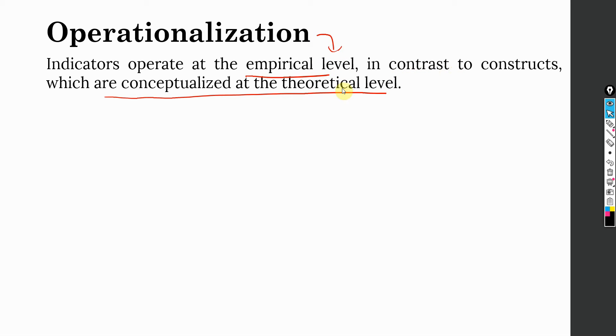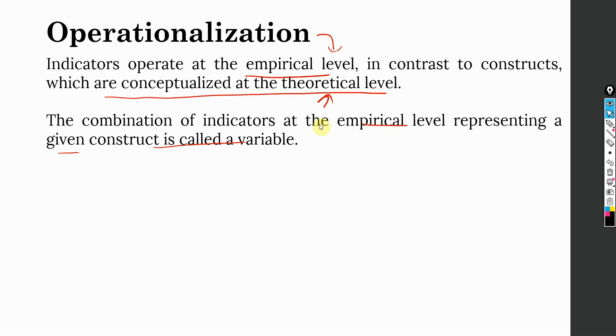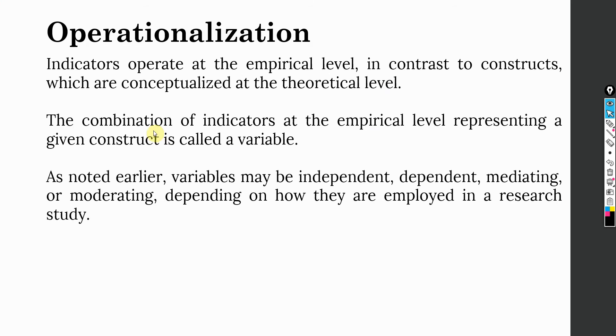The combination of indicators at empirical level representing a given construct is called a variable. When you measure or when you identify the indicators for a construct, it is now a variable because now it is measurable. As noted earlier, variables may be independent, dependent, mediating or moderating depending on how they are employed in a research study.